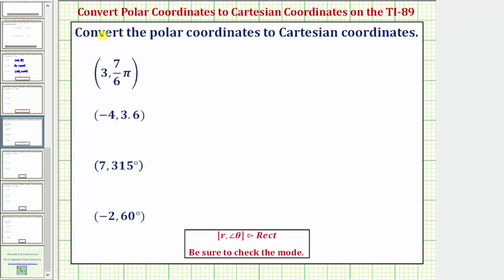Using polar coordinates, each ordered pair is in the form of r comma theta. Notice for these two ordered pairs, theta would be in radians and these two ordered pairs, theta's in degrees.